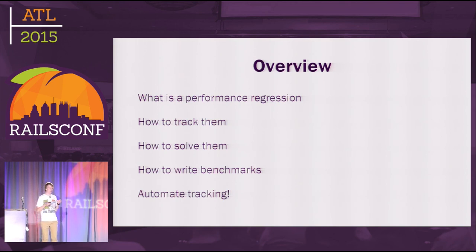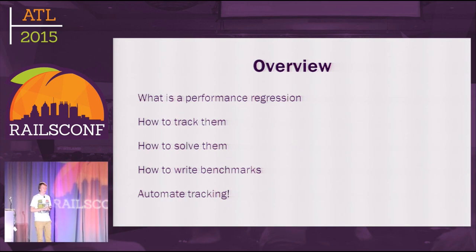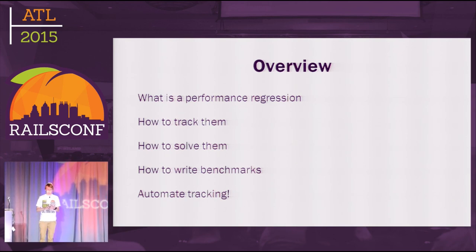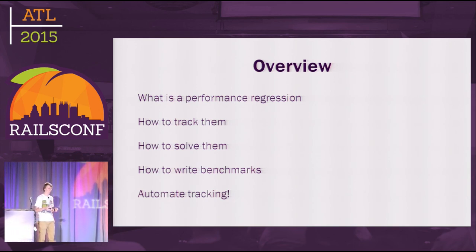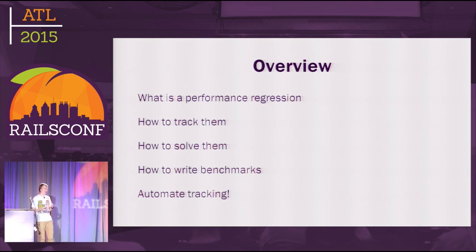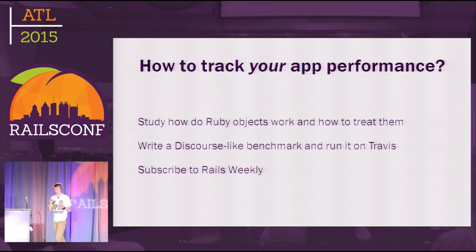So today we talked about what performance regression is, how they look in Rails, how they can be solved, how to find and track them, and what the tools are. We talked about building a benchmark suite and automating performance tracking. But what if you're not a Rails contributor and you're not planning to be? How can all these tricks help you make your app faster and avoid performance regressions, and track your own app's performance?